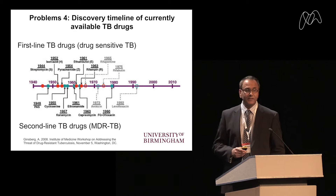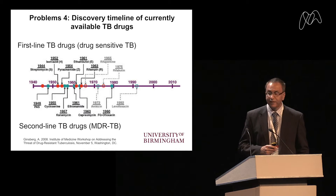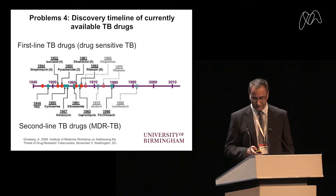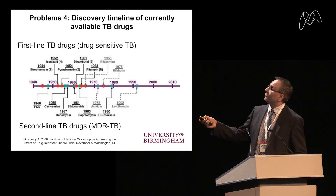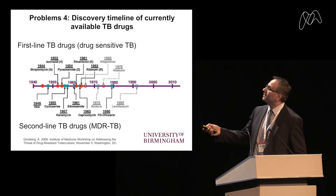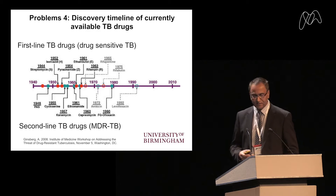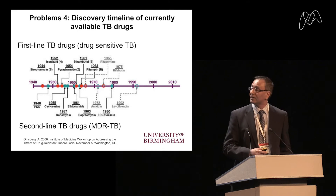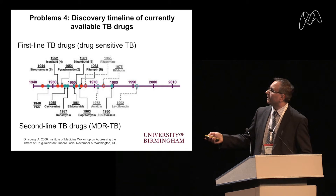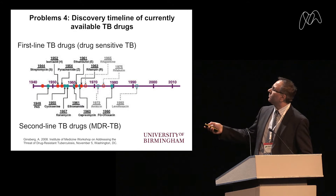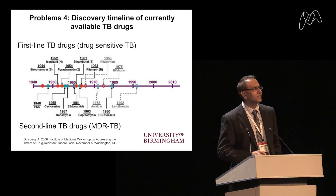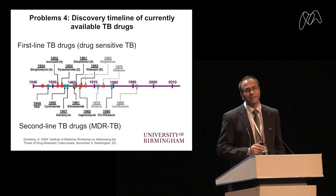When we think about chemotherapy and alternatives, looking at the discovery timeline of currently available TB drugs, the first-line drugs for drug-sensitive TB were really discovered in the 1950s and 60s — that golden era of antibacterial chemotherapeutics. The second-line agents came in the later 70s and 80s. But from 1980 onwards, there really hasn't been a major development in new therapeutics for tuberculosis, apart from two recently approved drugs.